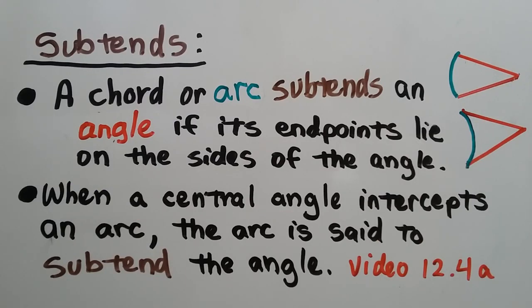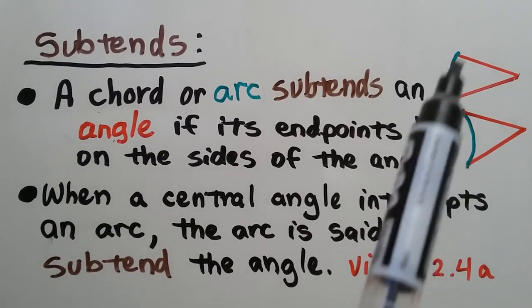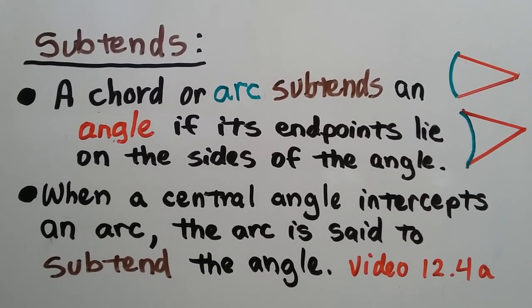As we discussed in the first part of this lesson, 12.4a, subtends: a chord or arc subtends an angle if its endpoints lie on the sides of the angle. When a central angle intercepts an arc, the arc is said to subtend the angle.